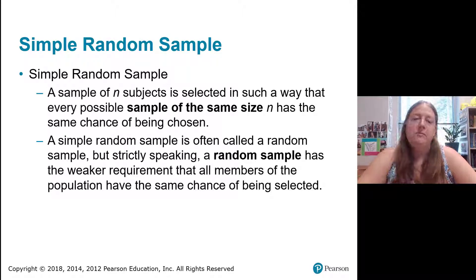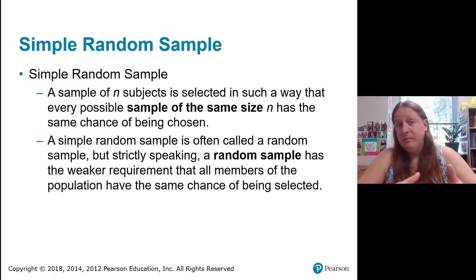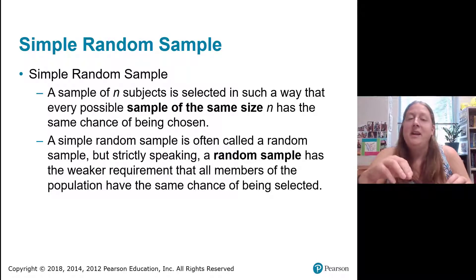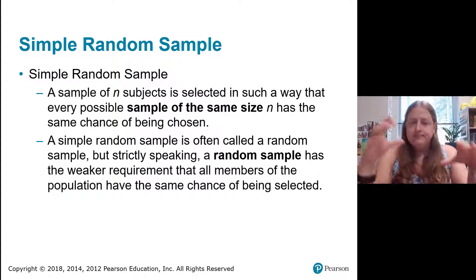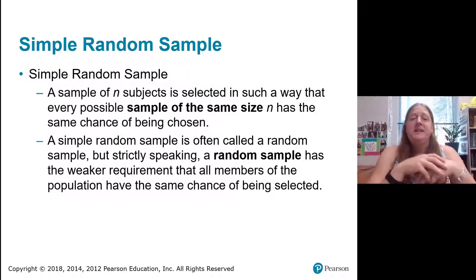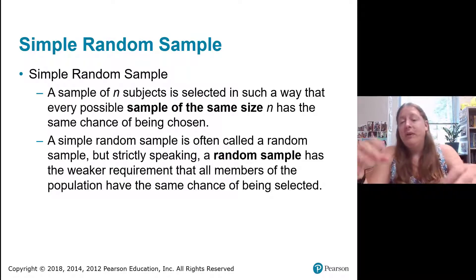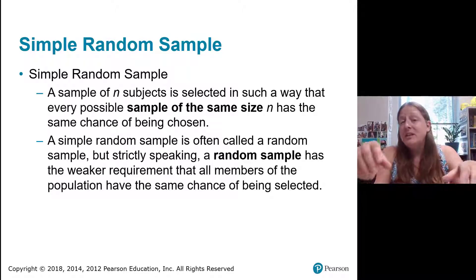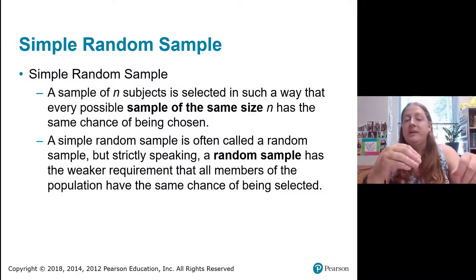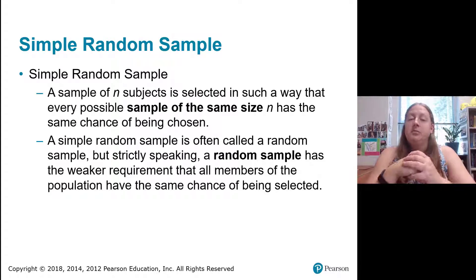A simple random sample is a sample of n subjects selected in such a way that if we take the entire population and look at all possible groups of n subjects, each of those groups has an equal chance of being selected. Many people use simple random sample and random sample interchangeably — however, a random sample just means everybody in the population has an equal chance of being selected, which is actually a weaker condition. So saying we have a random sample is not as strong as saying we have a simple random sample.